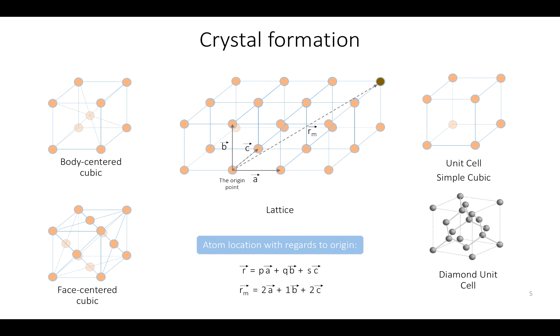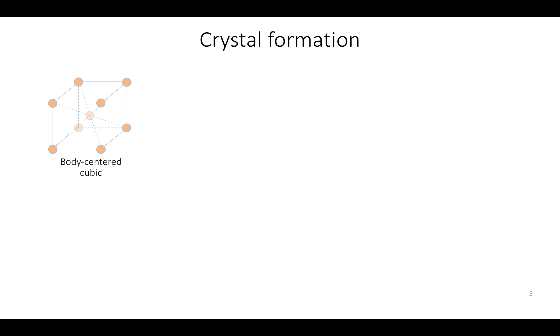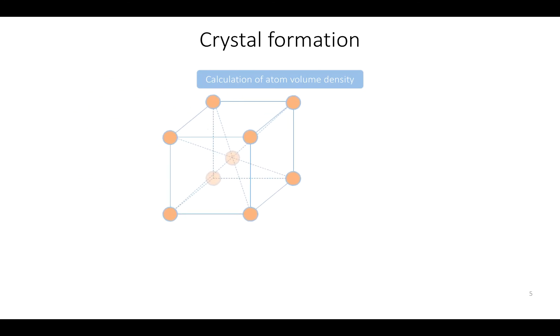So why do we need to know all this anyway? By knowing the crystal structure of a material and its lattice dimensions, or constants, we can determine several characteristics. For example, we can determine the volume density of atoms, or how many atoms are located in a specified semiconductor volume. Let's calculate the volume density of atoms for a body-centered semiconductor in one cubic centimeter.